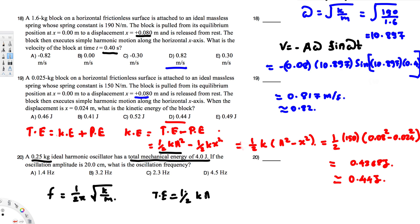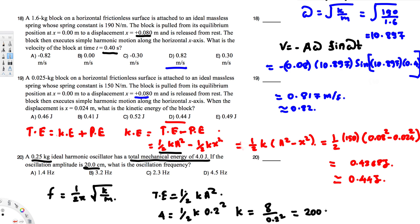Setting up: 4 joules = ½ × k × (0.2 m)². Solving for k gives k = 8 / (0.2²) = 200 N/m. Now we can solve for frequency: f = (1/2π) × √(200 / 0.25). If you calculate this, you get 4.5 hertz. So the answer is D.